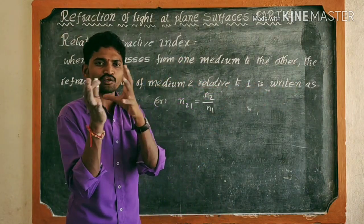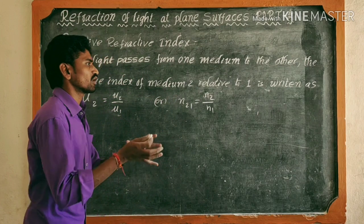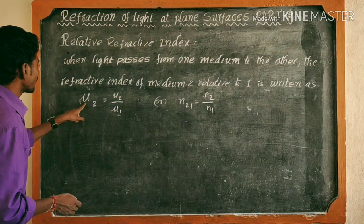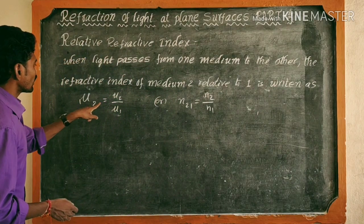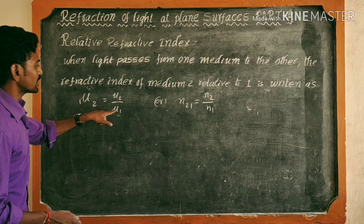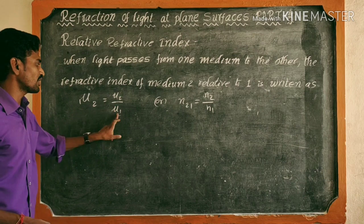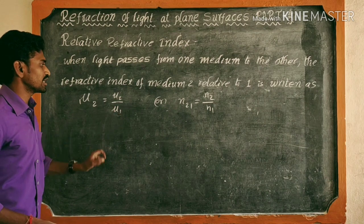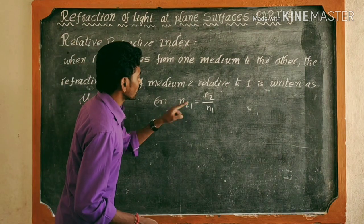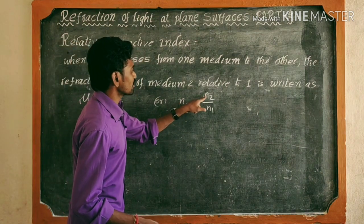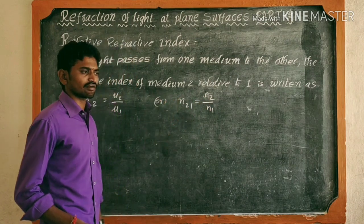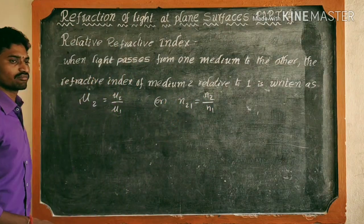So the relative refractive index is the refractive index of the second medium divided by the refractive index of the first medium. That is, n₂₁ = n₂/n₁.